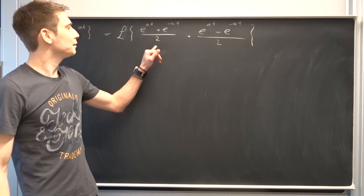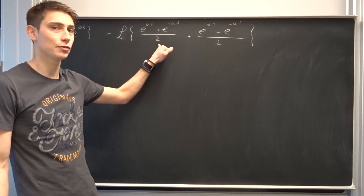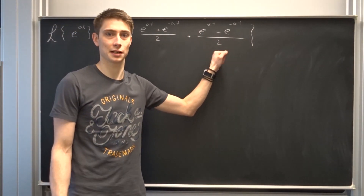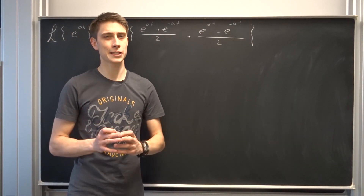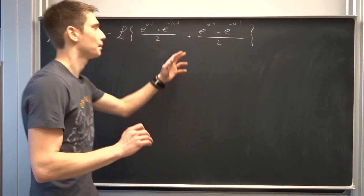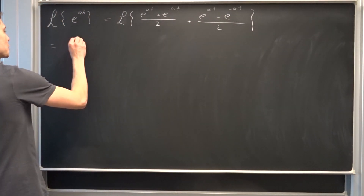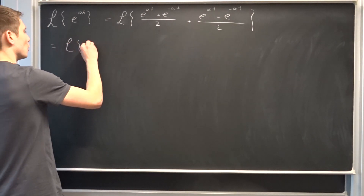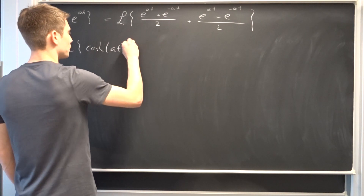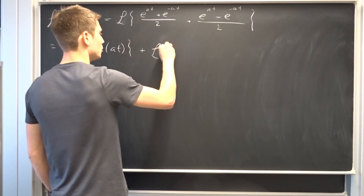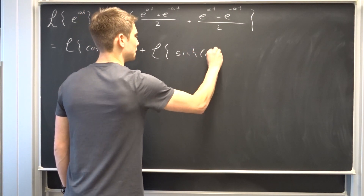You might notice something — those two look familiar. This is just the hyperbolic cosine of at, and this is just the hyperbolic sine of at. We can also use the linearity of the Laplace transform to split this whole thing up. So this Laplace transform is just the Laplace transform of the hyperbolic cosine of at plus the Laplace transform of the hyperbolic sine of at.